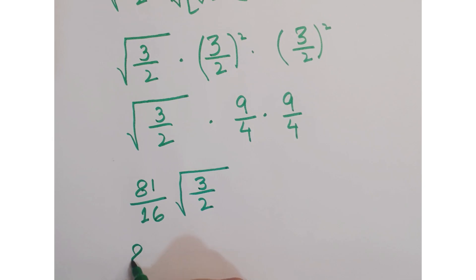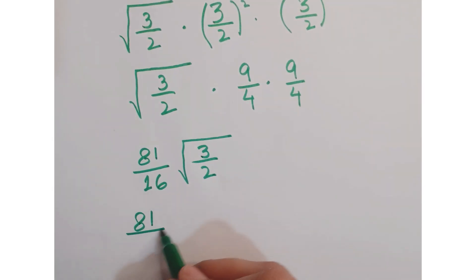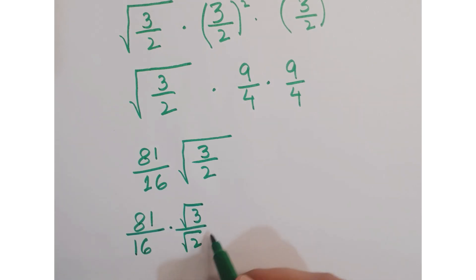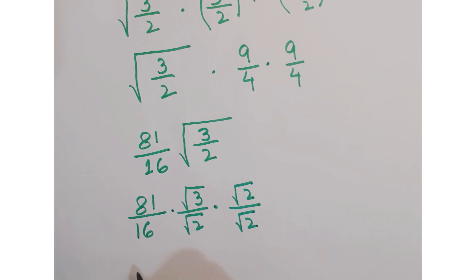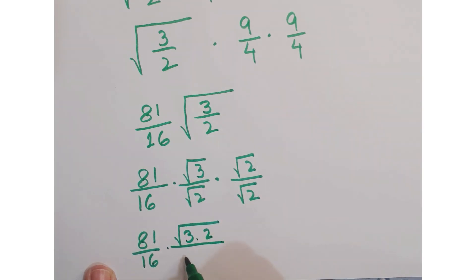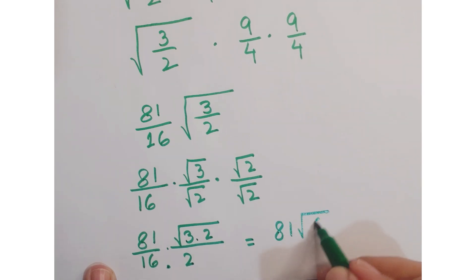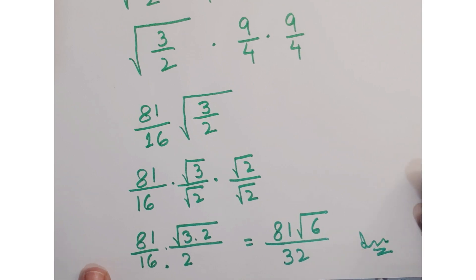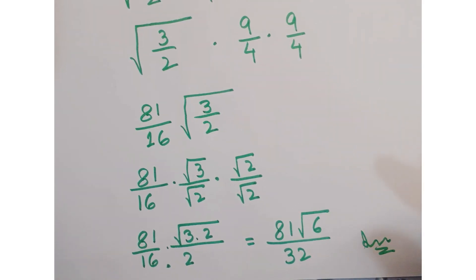We are going to rationalize it by multiplying and dividing by under root 2. So we get 81 upon 16 into root 6 upon 2, which gives us 81 into under root 6 upon 32. This is our answer after simplification. Thank you.